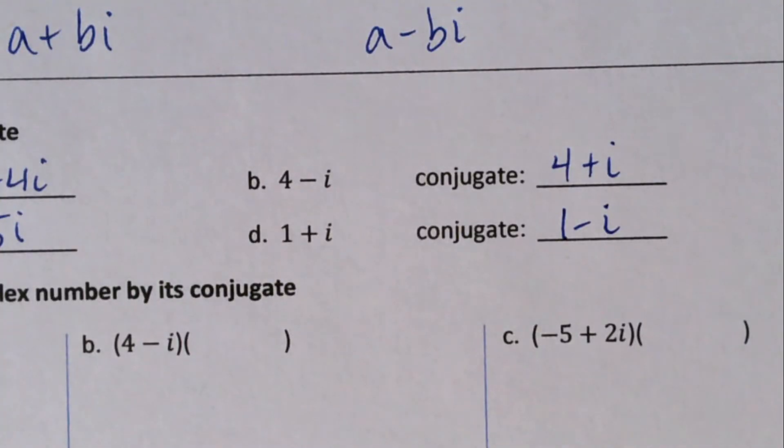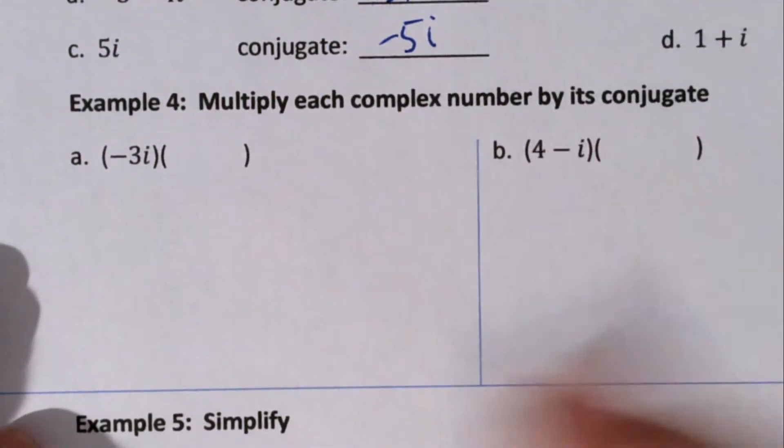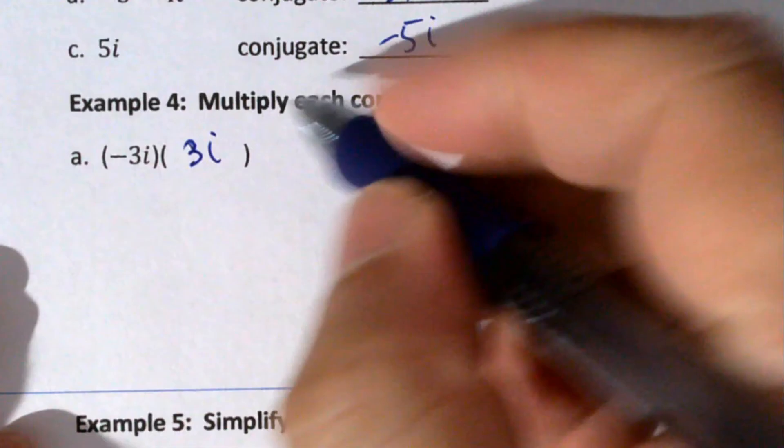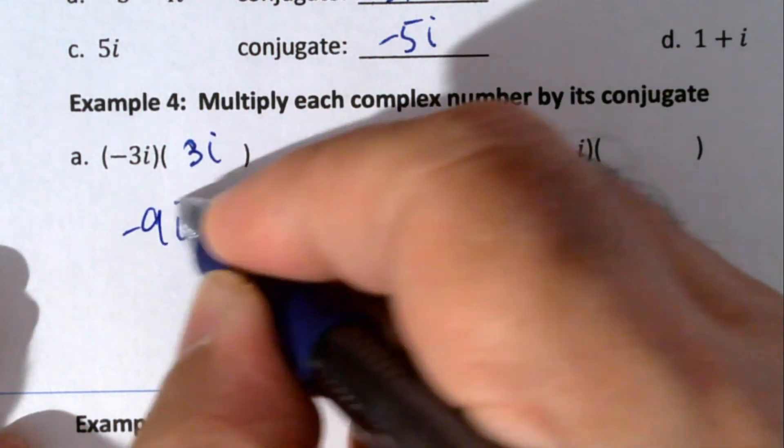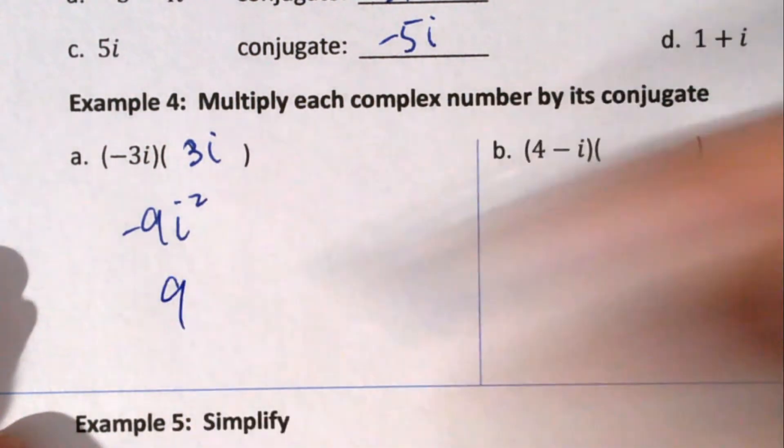So here, multiply each complex number by its conjugate. The conjugate of -3i is positive 3i. Multiply: it's going to be -9i². Right, -3 times 3 is -9, i times i is i². But what's i² do to that -9? It makes a positive.